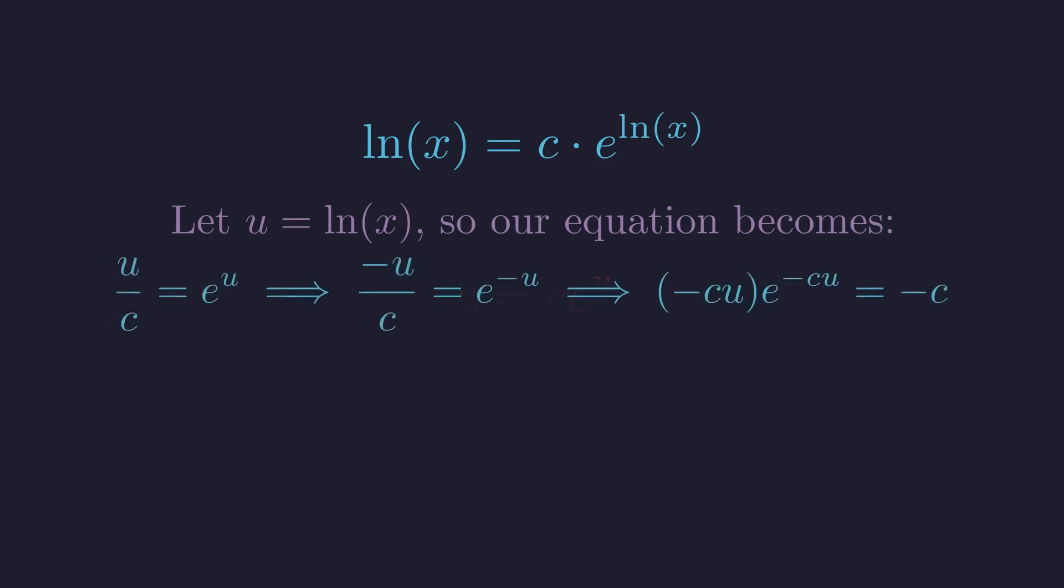Through algebraic manipulation, divide by c, multiply by negative 1, then multiply both sides by negative c times u to get the Lambert W form. Now we have exactly the Lambert W form. Something times e to the power of that same something equals a constant. By definition of the Lambert W function, negative c times u equals w of negative c. Now we solve for u by dividing both sides by negative c. So u equals negative 1 over c times w of negative c.